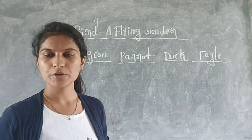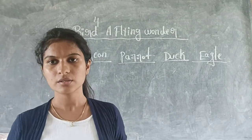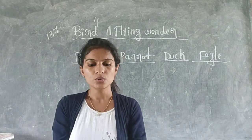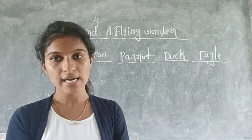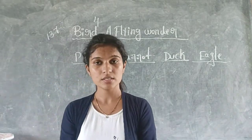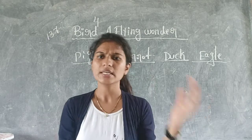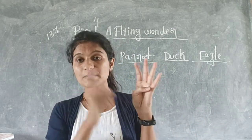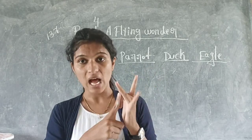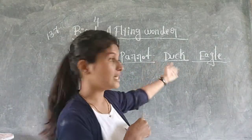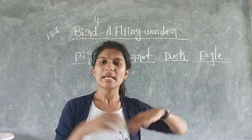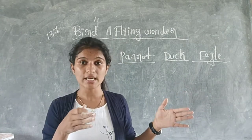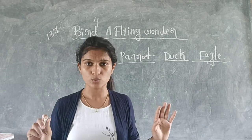It is very easy to identify birds by seeing their body structure. We can see many different kinds of birds around us - sparrow, parrot, crow, duck, eagle. Many kinds of birds you can see around you, and some birds are there whose names we don't even know.